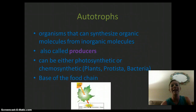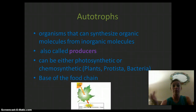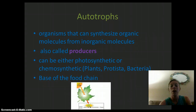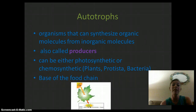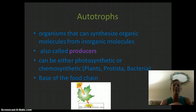Autotrophs are organisms that can synthesize organic molecules from inorganic molecules — they take energy and make sugar or their own food from inorganic molecules. These are producers. They can be photosynthetic, using light, or chemosynthetic, using chemicals. Examples include plants, protists, and bacteria. They are going to be the base, or the bottom, of the food chain.